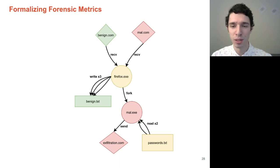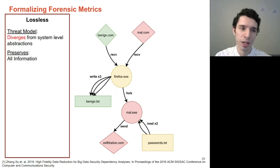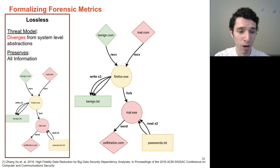Under the lossless forensic metric, we assume that our adversary might diverge from system-level abstractions, and thus might utilize side-channel information such as the timing and frequency of system calls to communicate with colluding processes. Therefore, if we wish to preserve all possible information, then our ideal approximation of the original provenance graph is simply the same provenance graph.